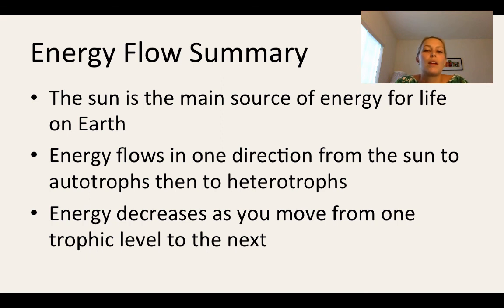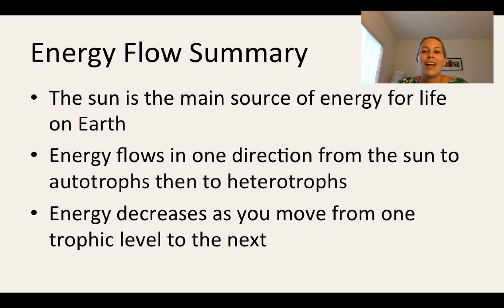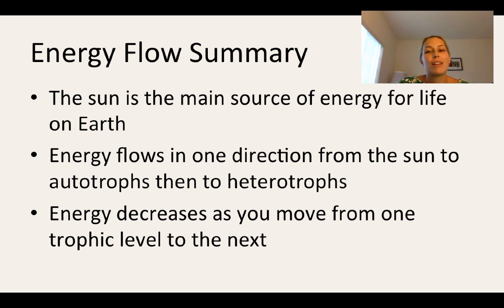In summary, the sun is the main source of energy for life on Earth. Energy flows in one direction from the sun to autotrophs and then to heterotrophs, and energy decreases as you move from one trophic level to the next. Only 10% of the energy is passed from one trophic level to the next, and 90% of that energy is lost as heat. Thanks for watching.